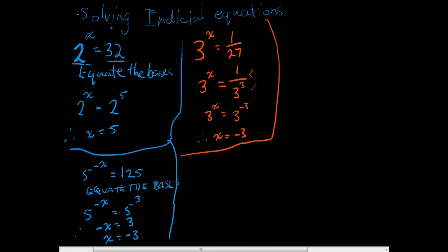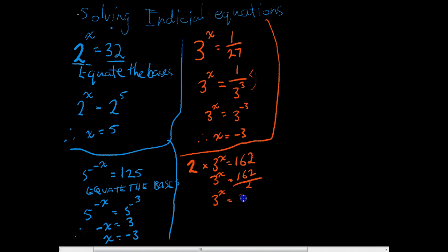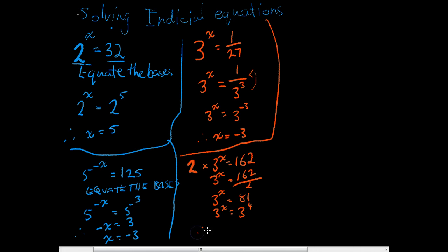From here we can add little bits to make it slightly harder. Something like 2 times 3 to the x equals 162. First, get rid of the 2 by dividing both sides by 2, giving 3 to the power of x equals 81. Then equate the bases: 3 times 3 is 9, times 3 is 27, times 3 is 81 — that's 3 to the power of 4. Therefore x equals 4.